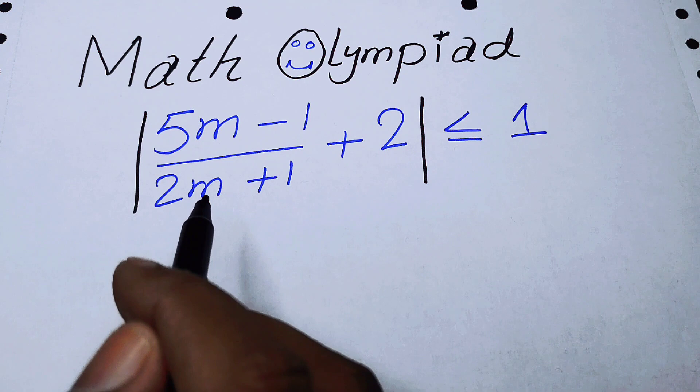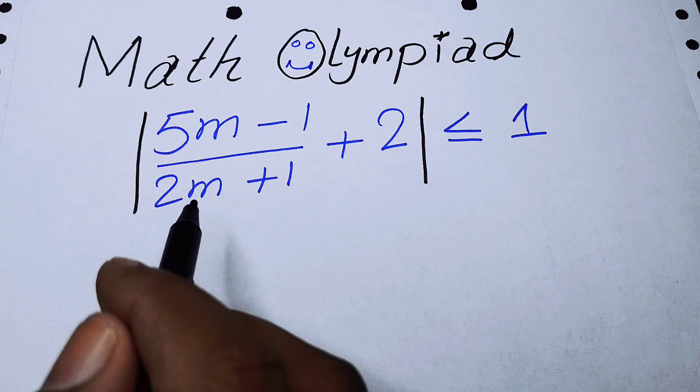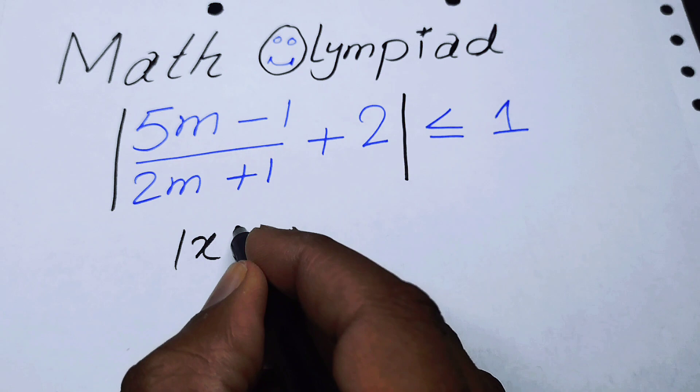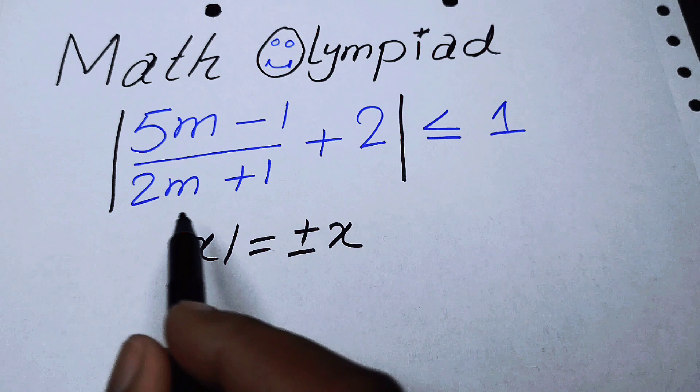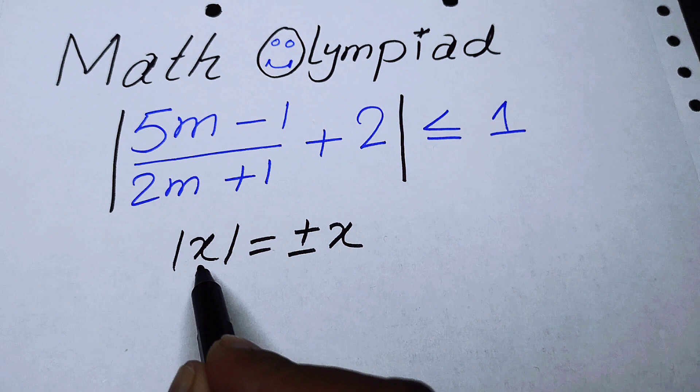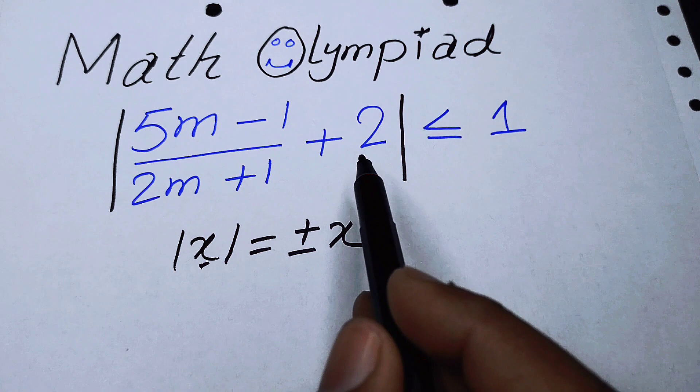The very first thing to remember is that the absolute value of x is equal to plus or minus x. When we open the absolute sign, it becomes plus or minus times the number which contains the absolute sign.